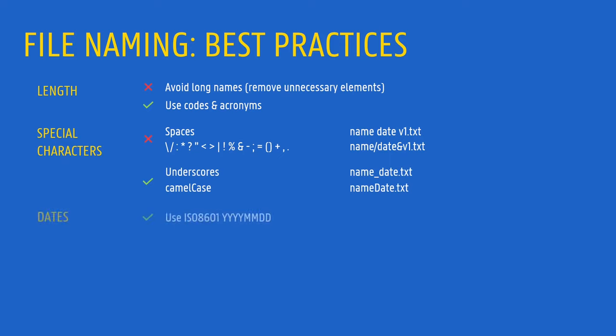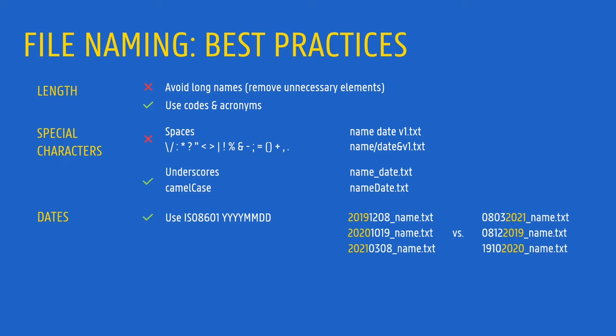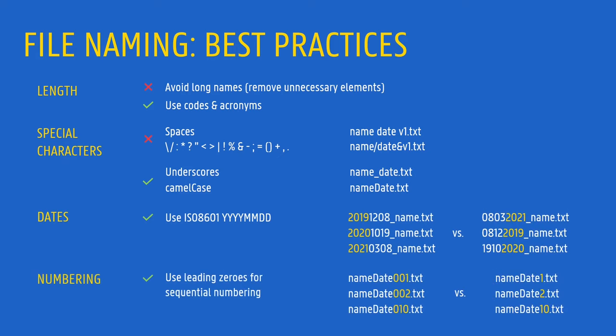For dates, a good tip is to use the ISO standard. It will allow you to sort files chronologically. For sequential numbering, use leading zeros. This will make sure that your files are sorted in the correct order.